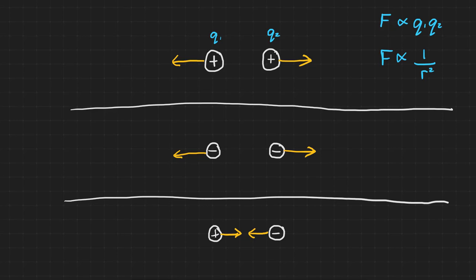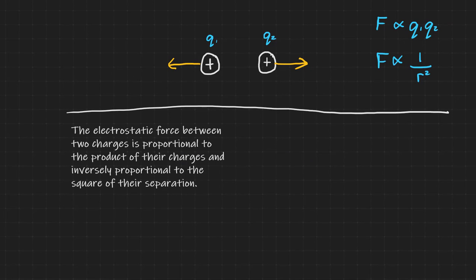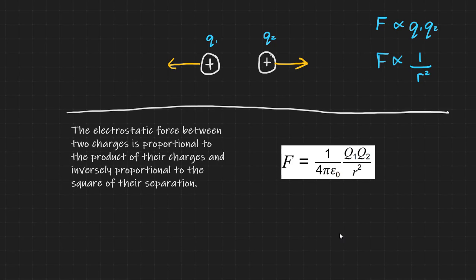This is known as Coulomb's law. The electrostatic force between two charges is proportional to the product of their charges and inversely proportional to the square of their separation. Or F equals 1 over 4πε₀ multiplied by Q₁ times Q₂ divided by r squared. Where Q₁ and Q₂ are respectively the magnitudes of the two point charges in Coulombs and r is their separation in metres.